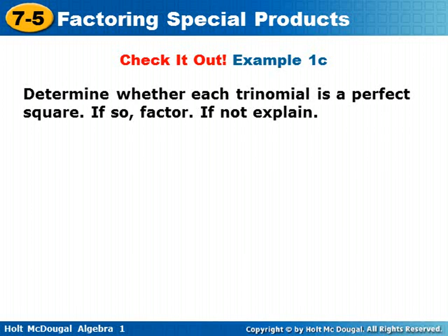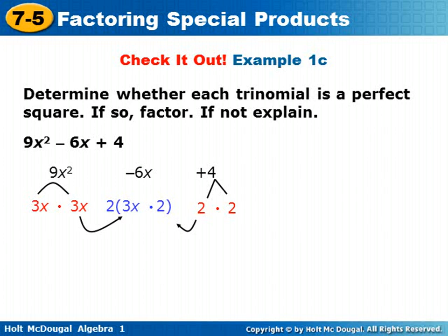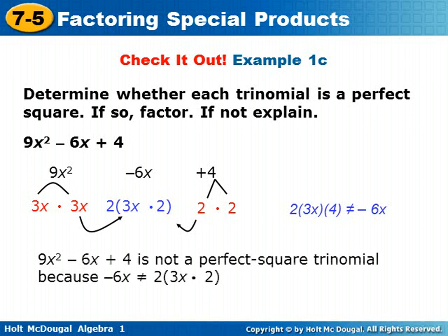Determine whether each trinomial is a perfect square. If so, factor. If not, explain. For 9x squared minus 6x plus 4 — try this on your own and then check back. 9x squared is a perfect square — 3x times 3x, or 3x squared. 4 is a perfect square — 2 times 2, or 2 squared. The middle would have to equal 2 times 3x times 2, but 2 times 3x times 2 does not equal negative 6x. So 9x squared minus 6x plus 4 is not a perfect square trinomial because negative 6x does not equal 2 times 3x times 2.